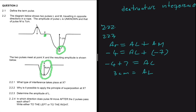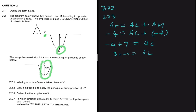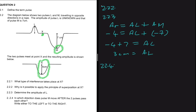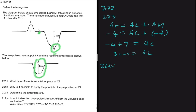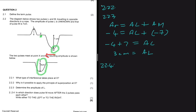Question 2.2.4: in which direction does pulse M move after the two pulses pass each other? Since the two pulses met at X, pulse M was moving to the left. So the answer is: pulse M continues moving to the left, while pulse L continues moving to the right.